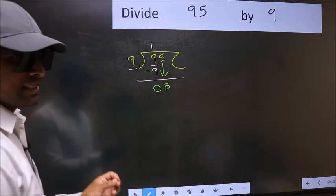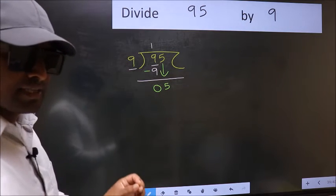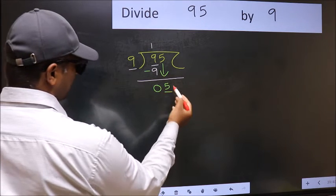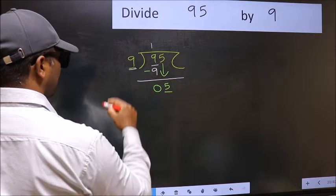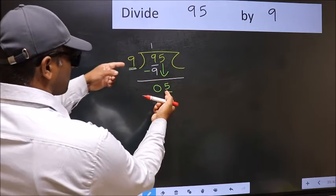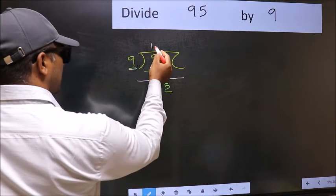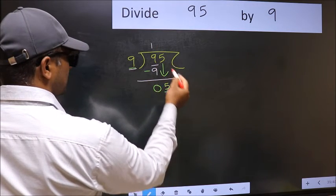After this step, the mistake happens. And the mistake is this: Here we have 5 and here 9. 5 is smaller than 9. So, what many do is they directly put the dot and take 0.